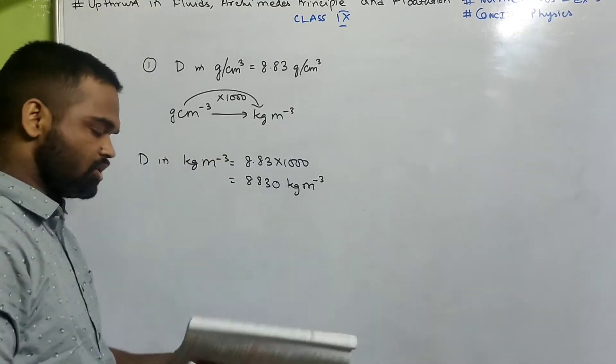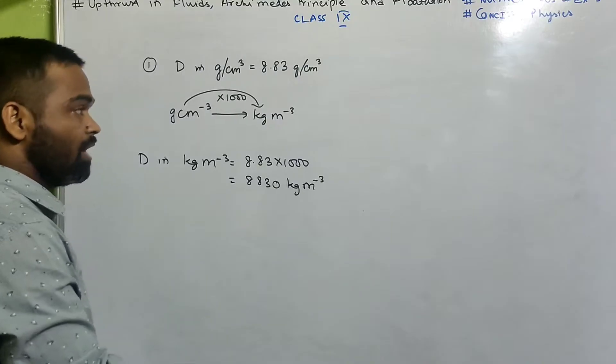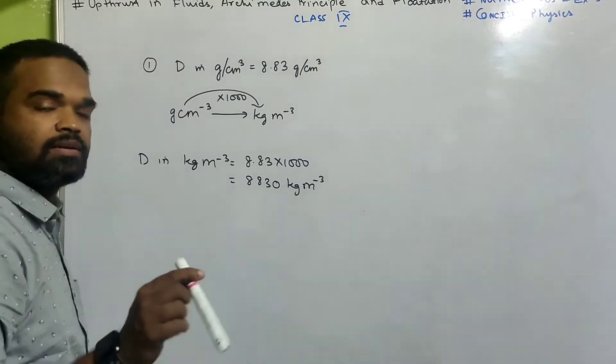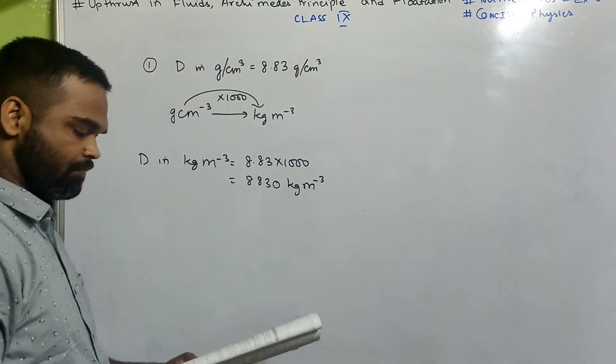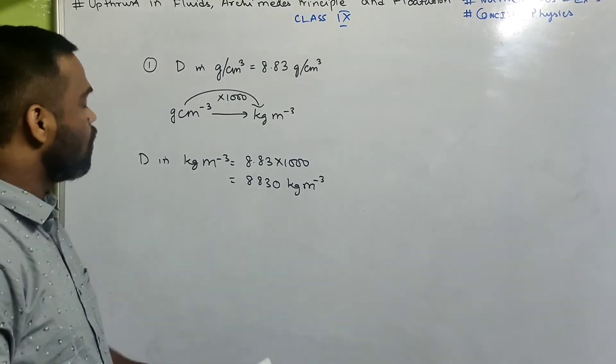We just need to remember this relation: from CGS to SI, when you are converting, you multiply by thousand. So this was number one.